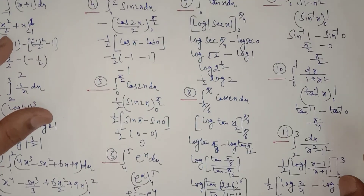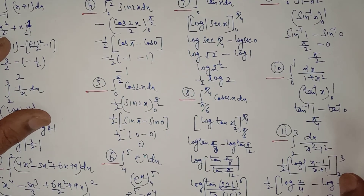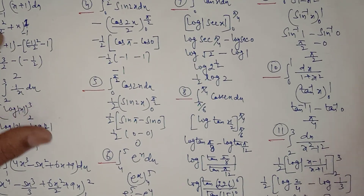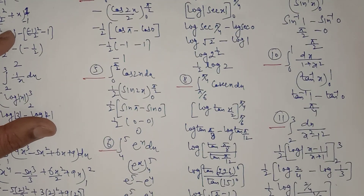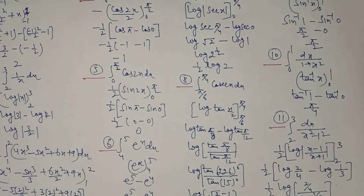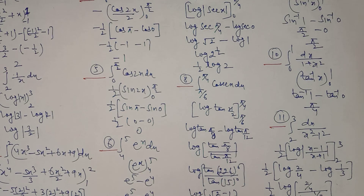For the definite integral from 4 to 5 of e^x with respect to x, the antiderivative is e^x. Evaluating gives e⁵ − e⁴. In this way you can find the definite integral in exercise 7.9. We'll discuss more in the next lecture. Thank you.